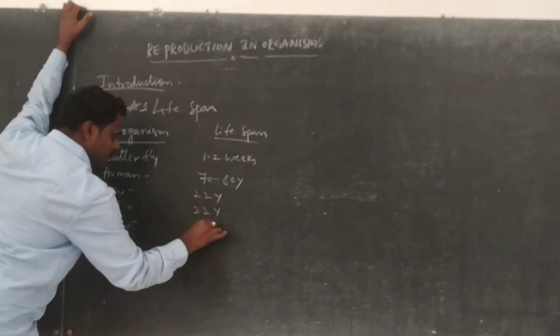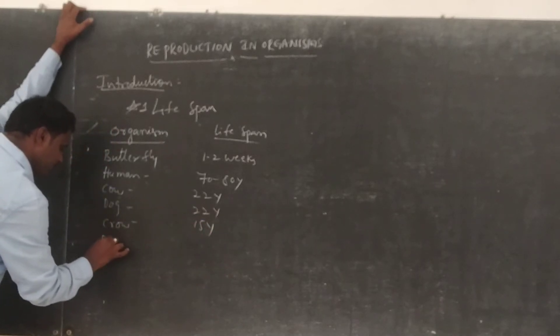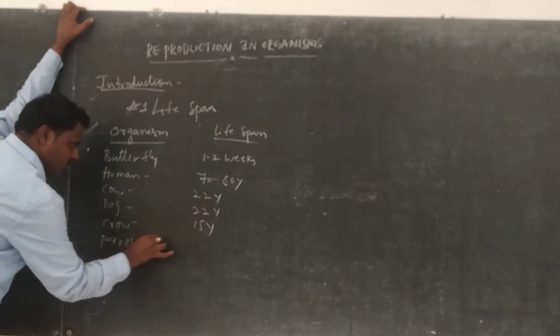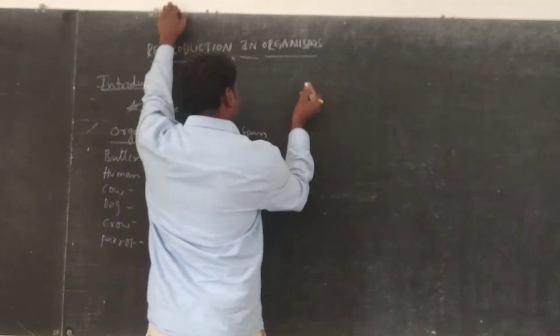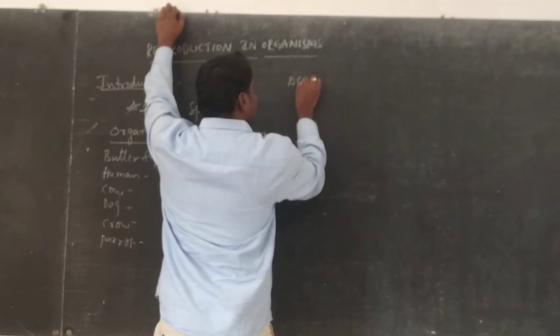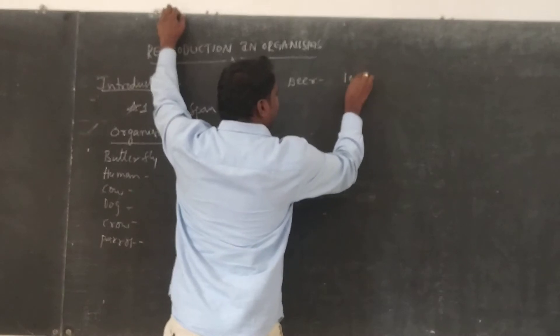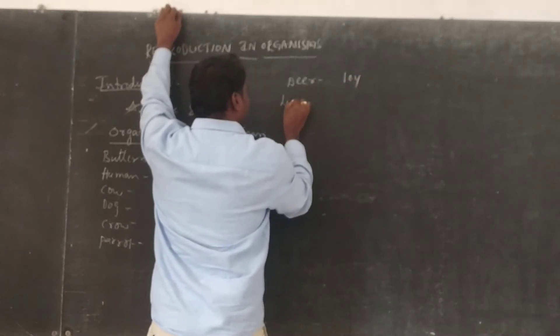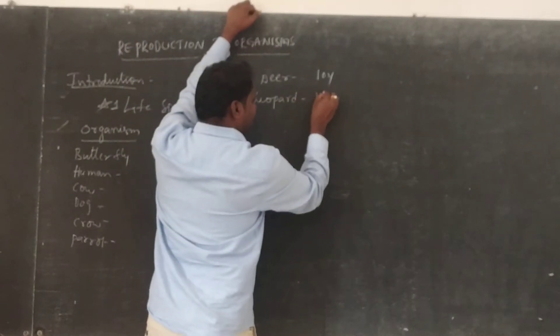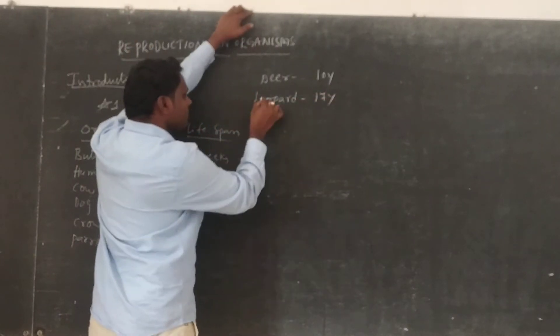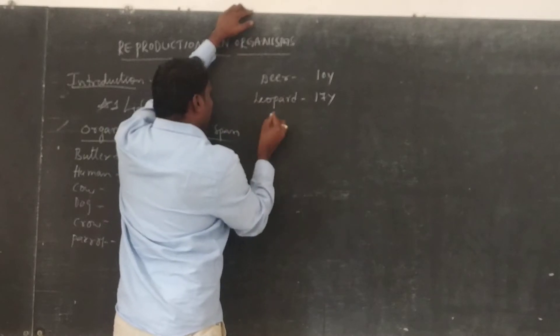Frog, 15 years. Parrot, 140 years. Crow, 10 years. Leopard, 17 years. Rabbit, 9 years.